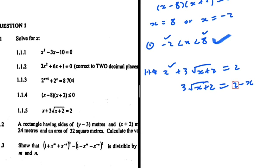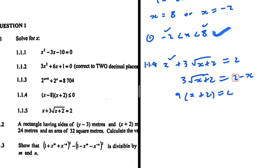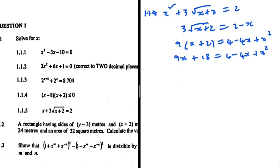Now we can square both sides. We get 9(x plus 2) on the left — squaring 3 and removing the square root — and (2 minus x) squared equals 4 minus 4x plus x squared on the right. Expanding the left side gives 9x plus 18 equals 4 minus 4x plus x squared.